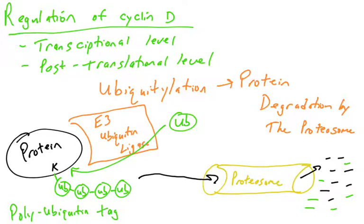The reason we're reviewing it now is because the cyclin D protein is one of many proteins in the cell that's regulated by ubiquitination. So let's see that here.